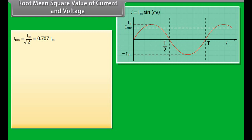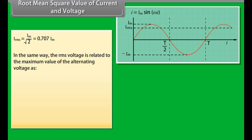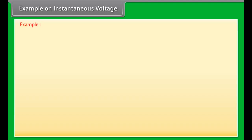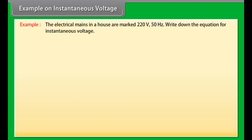Root mean square value of current and voltage: consider the sinusoidal voltage and current V = Vm sin(ωt) and I = Im sin(ωt). Both V and I are positive for one half of the cycle and negative in the other half; therefore the average value over a complete cycle is zero. The square root of the average value of the square of the current is called the root mean square (RMS) current: Irms = Im / √2.